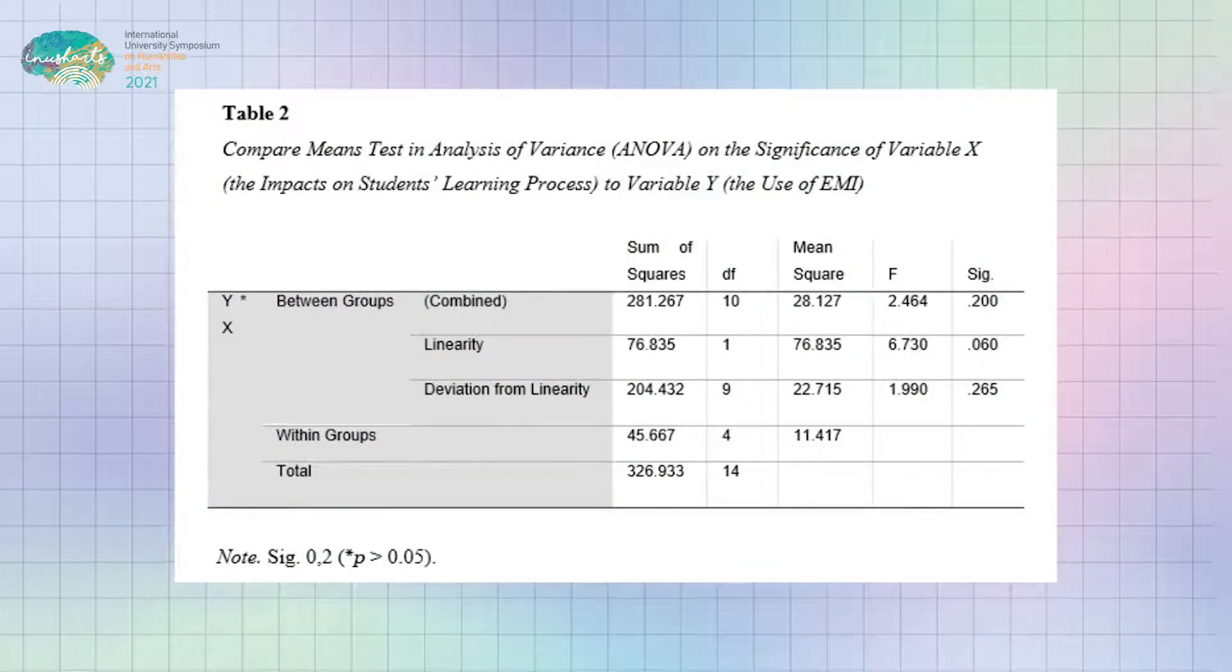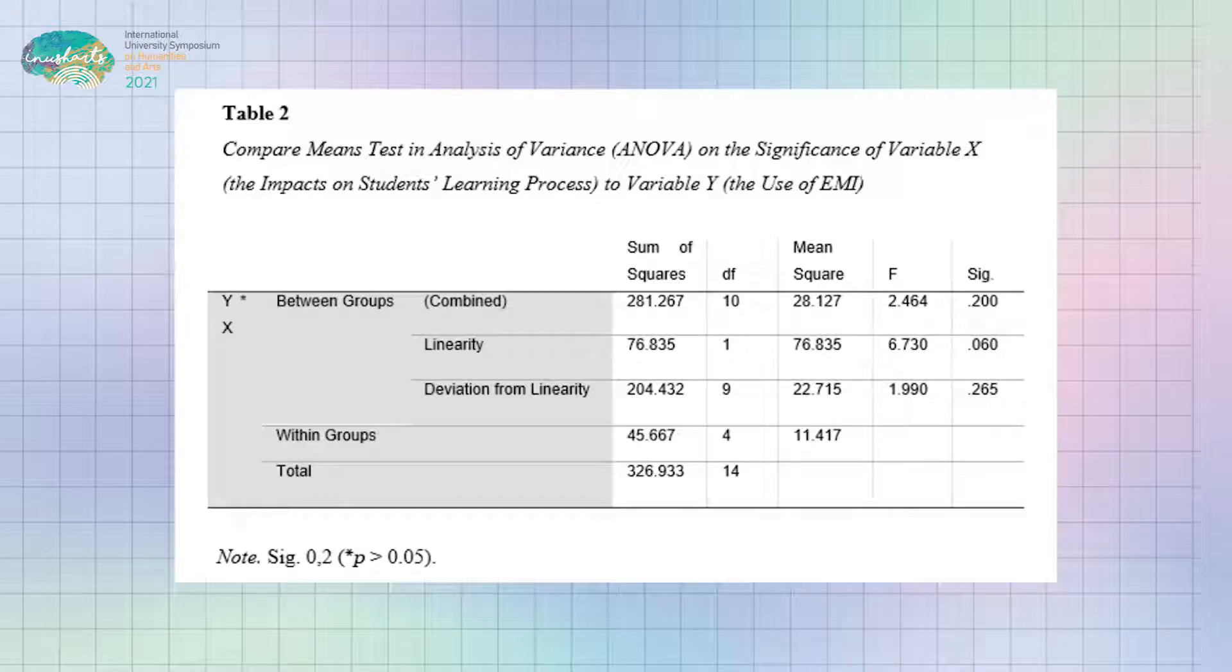Based on the ANOVA table, the SIG value shows the value of 0.20, which can be concluded that the data supports the null hypothesis in which variable X does not significantly influence variable Y. By this finding, it is clear that the value resulted from measures of association can be accepted statistically.